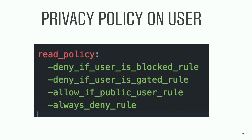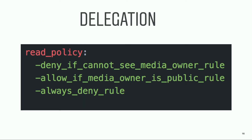We started with deny-if-user-blocked, followed by deny-if-user-is-gated, which handles age and geo-gating. Then public accounts should always be visible. If none of the conditions are satisfied, we always return deny. We could also build a delegation relationship between privacy rules. Delegation happens naturally — for example, if you cannot look at an account, you should not be able to see the media from that account. With the ability of building a delegation hierarchy, privacy logic becomes much simpler.